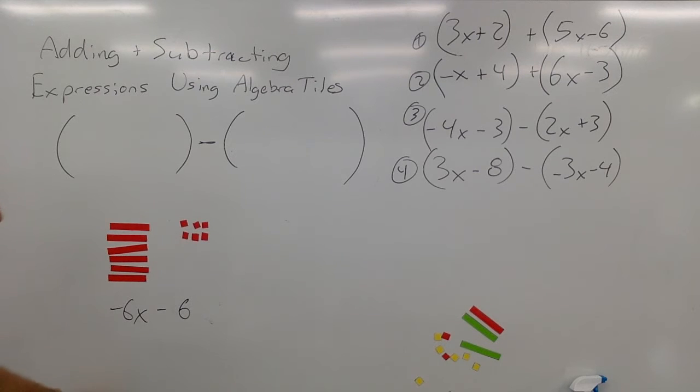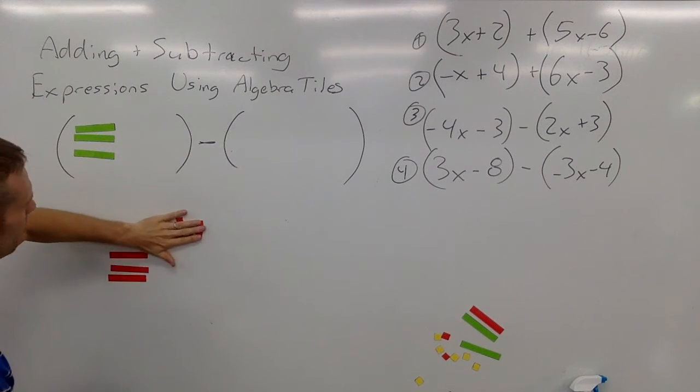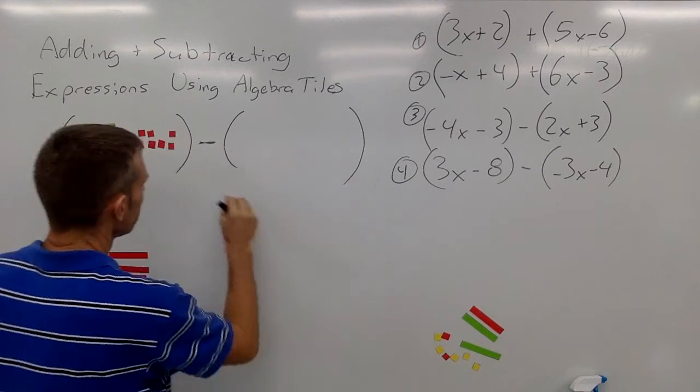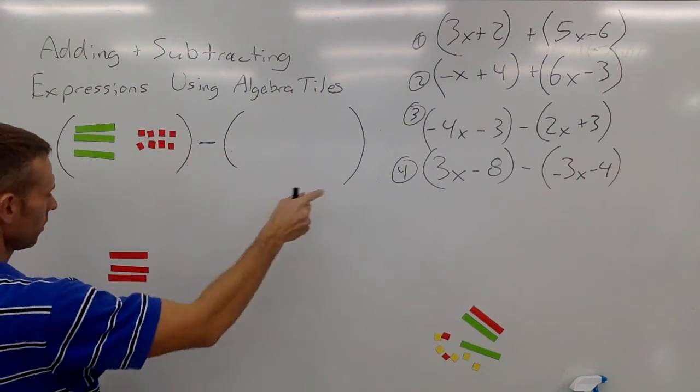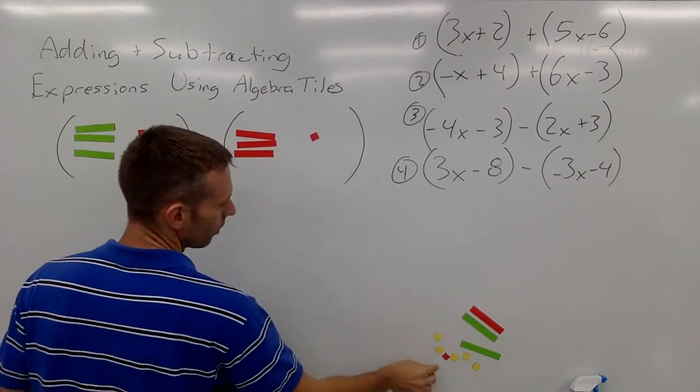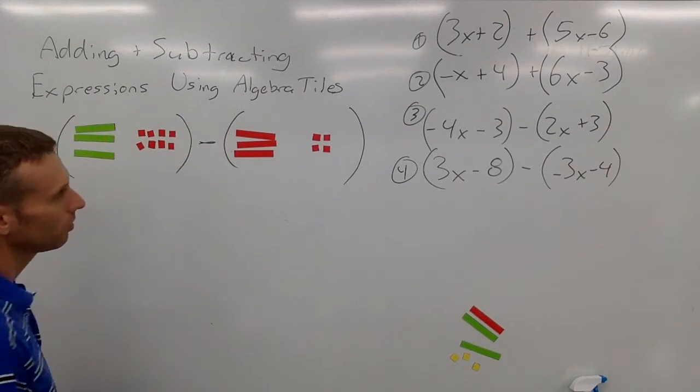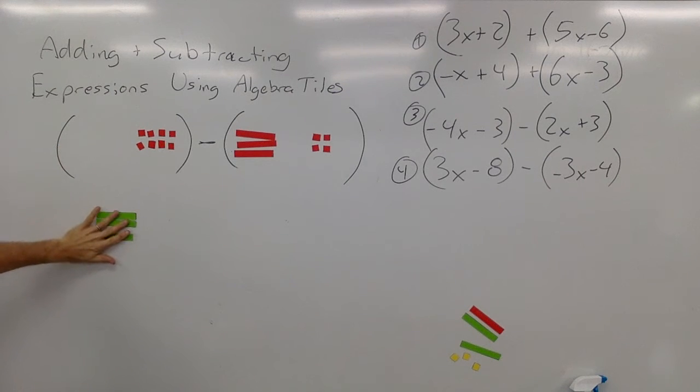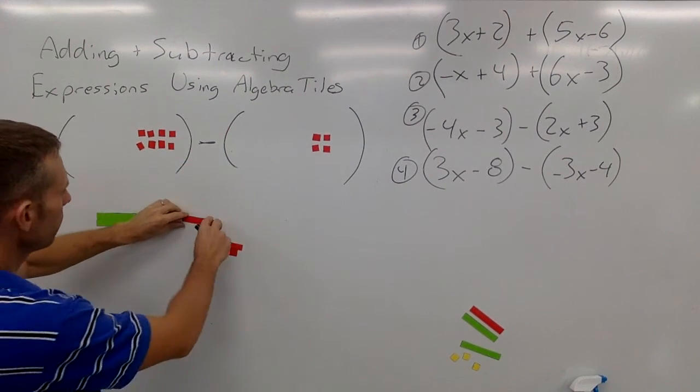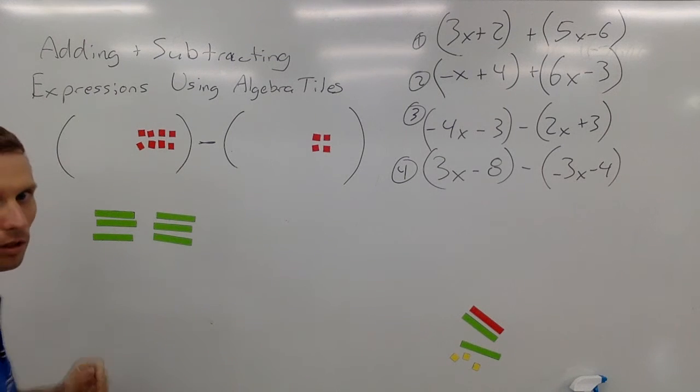All right, let's try one last one. I have a positive 3x minus 6, minus negative 3x and then minus 4. Positive 3x. When I combine like terms, I'm going to subtract negative 3x, so that means I'm going to add positive 3x. I hope you can follow that along. If you can't, rewind the video and see if you can catch it the second time.